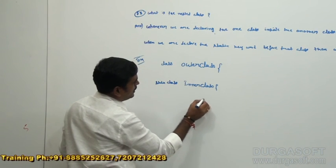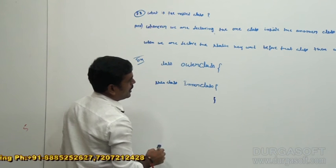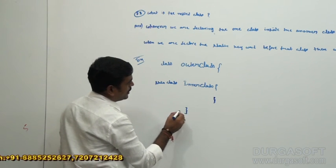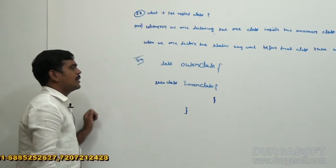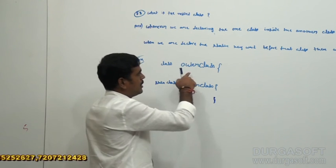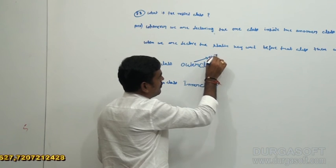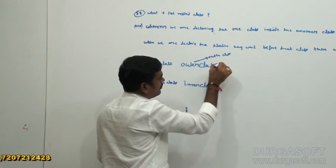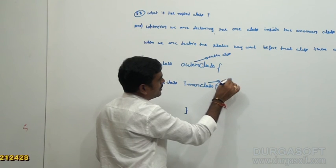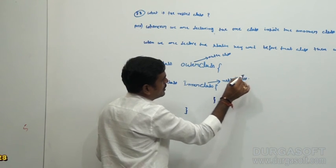So under that we can define any number of properties and variables, then close the class, close the main class. This is the outer class, this is what — nested class.